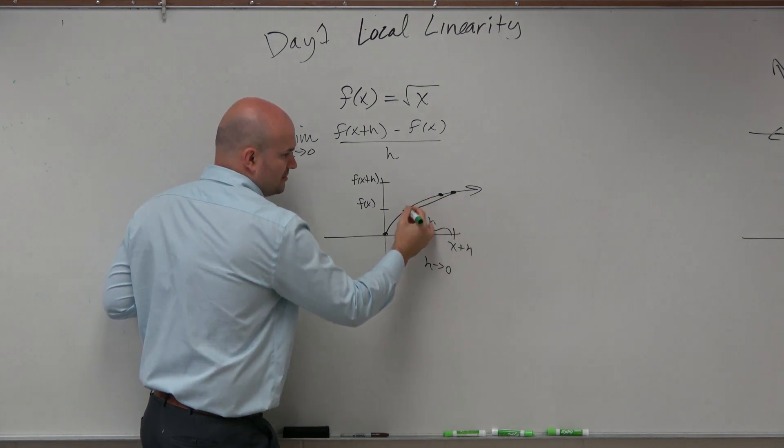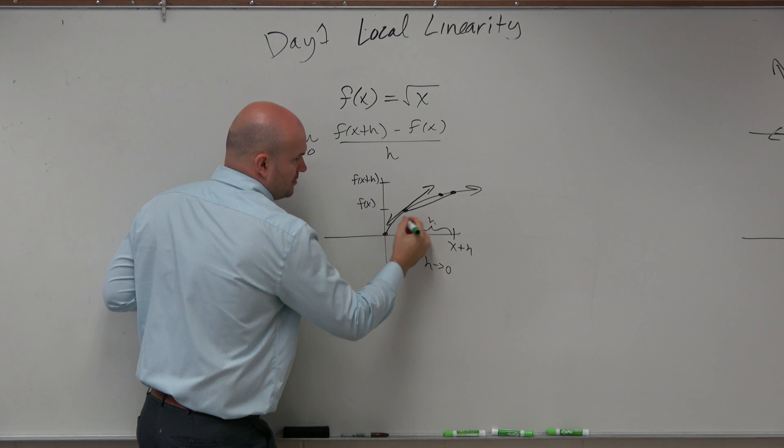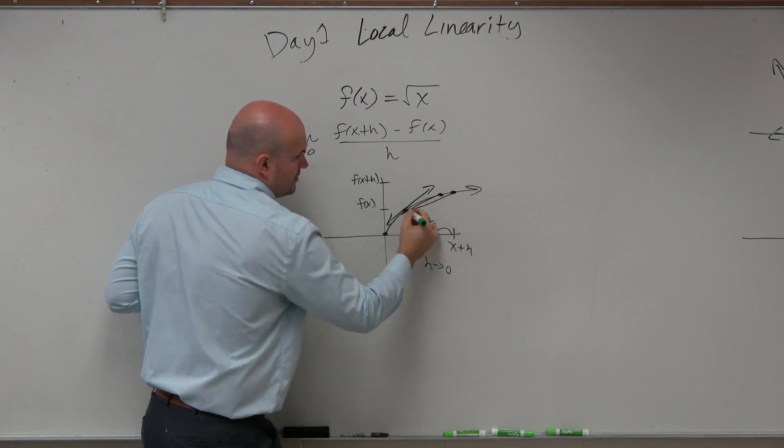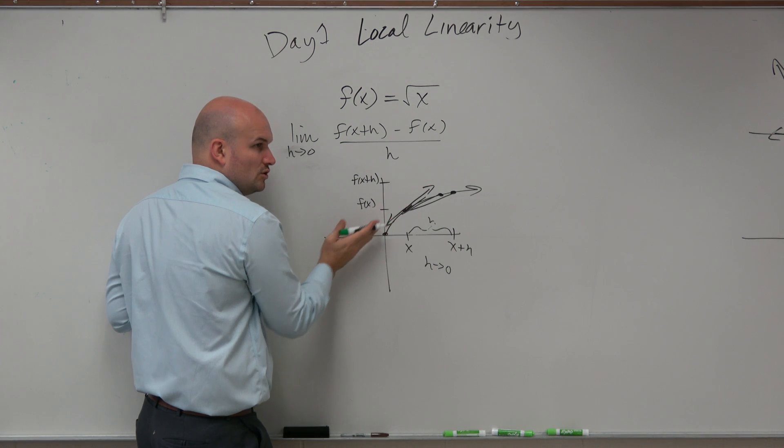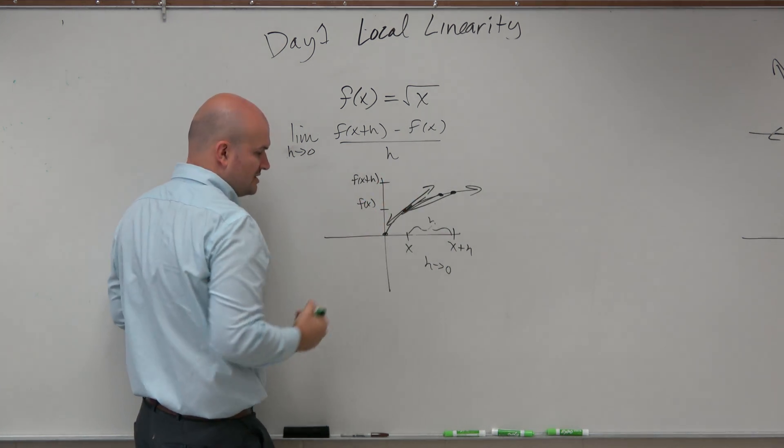It gets smaller and smaller. So what we're doing is we're just using this to be able to find that local linearity right at that point as h goes to 0.